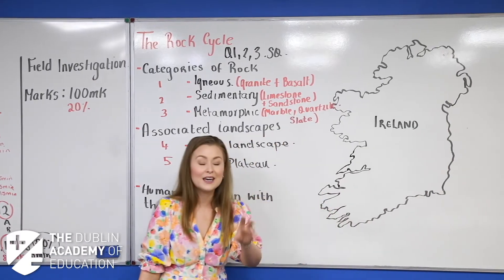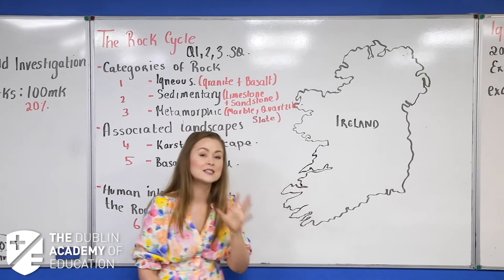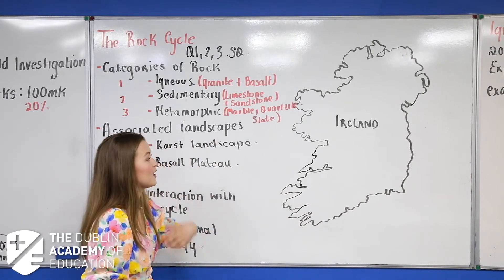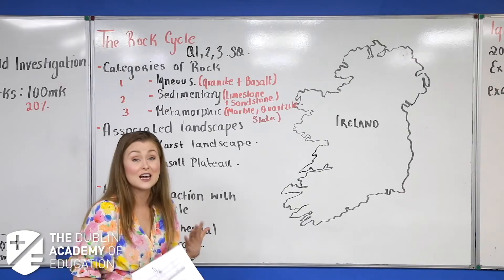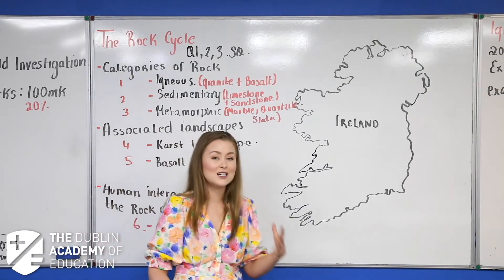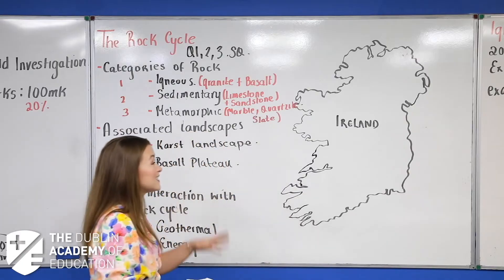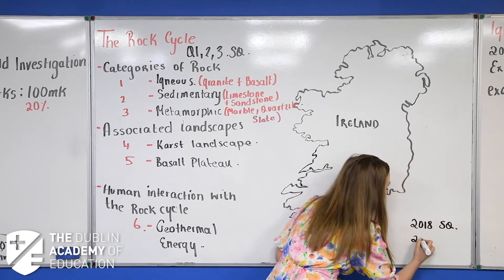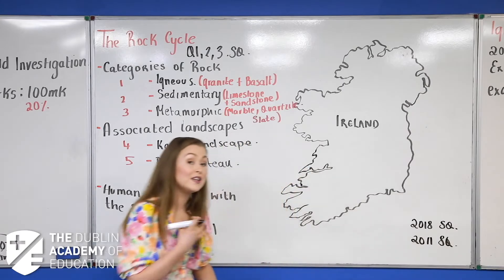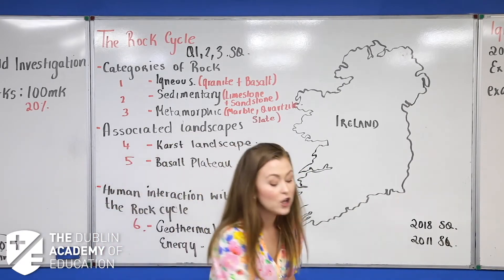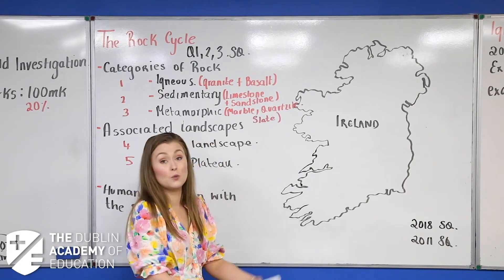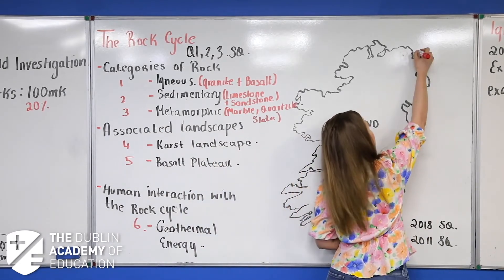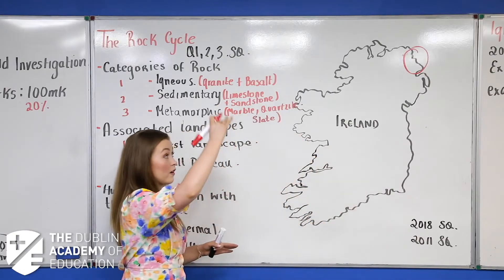Moving over to page three, you'll see your map of Ireland. At the top of this page write: short questions Part A only. On this map we're going to circle different areas around the country and where you'll find each rock type. This has come up twice — in 2018 and 2011 as short questions. Both times you would have seen a map of Ireland asking for the rock type or the name of the area.